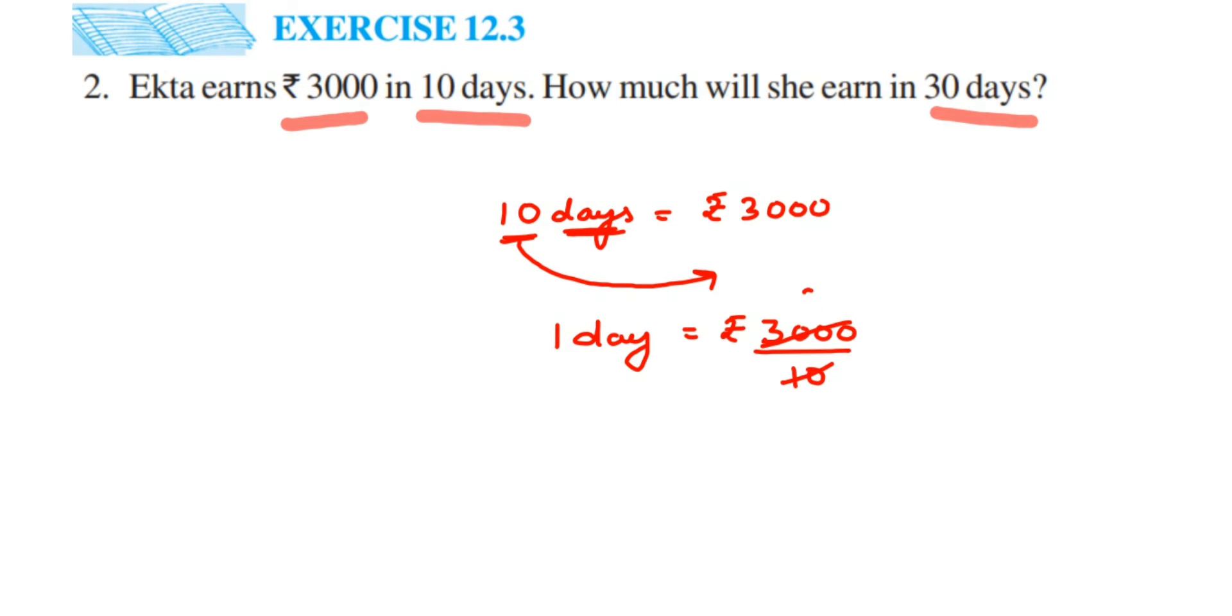So she's earning 300 rupees in one day. Why are we dividing? They've given 10 days equals rupees 3000. Using the transpose method, 10 is in multiplication, so when you transpose it goes to division.